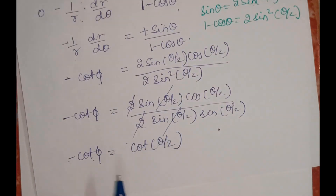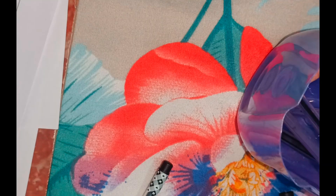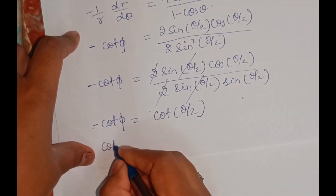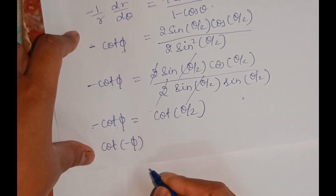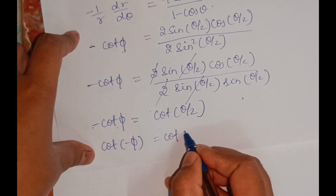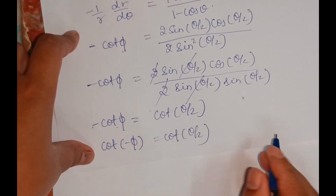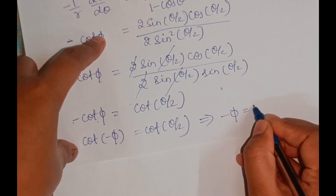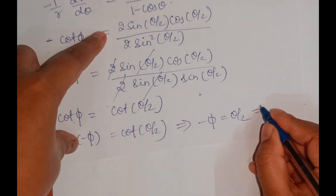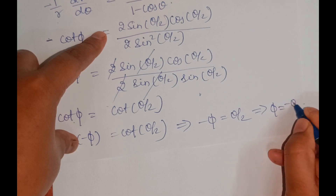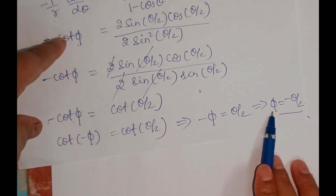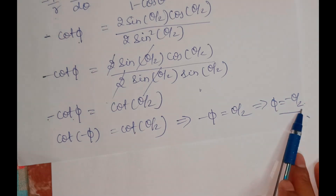So here we have -cot φ = cot(θ/2), which I can write as cot(-φ) = cot(θ/2). This is equivalent to -φ = θ/2, which gives φ = -θ/2. So my φ value is -θ/2.